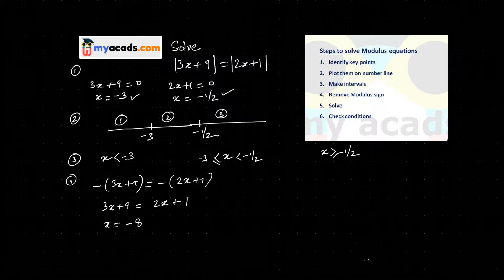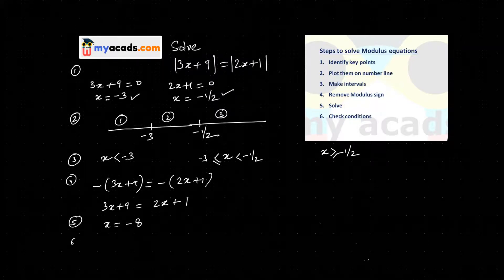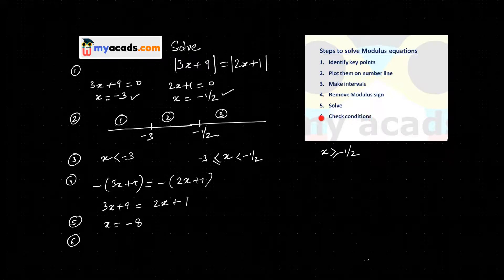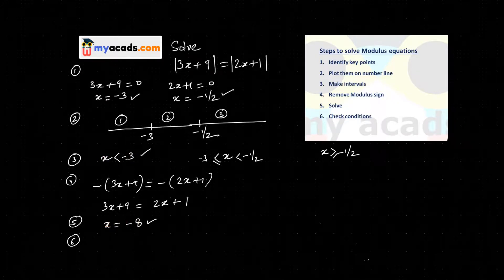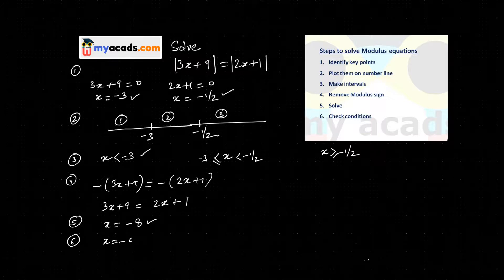Now my sixth step is to check conditions. My condition was that x is less than minus 3, and x equals minus 8. Since minus 8 is indeed less than minus 3, this condition is satisfied. So x equals minus 8 is one valid solution.